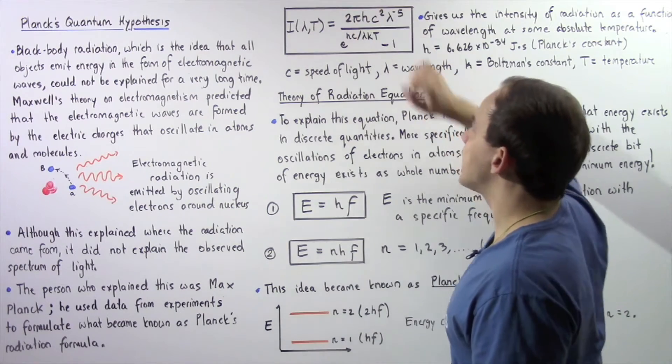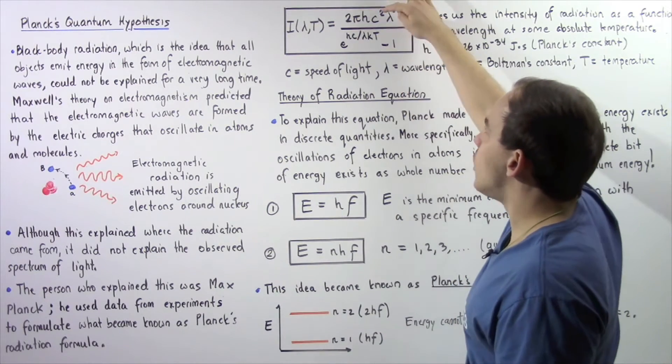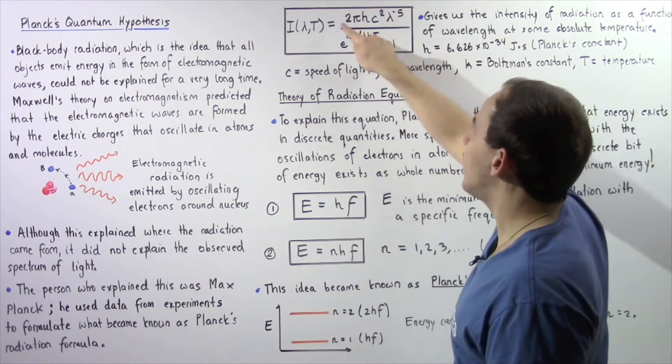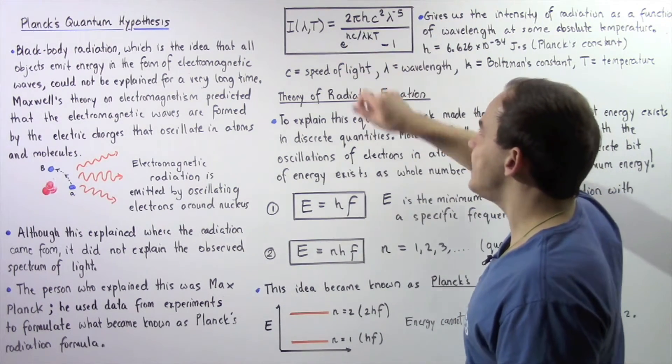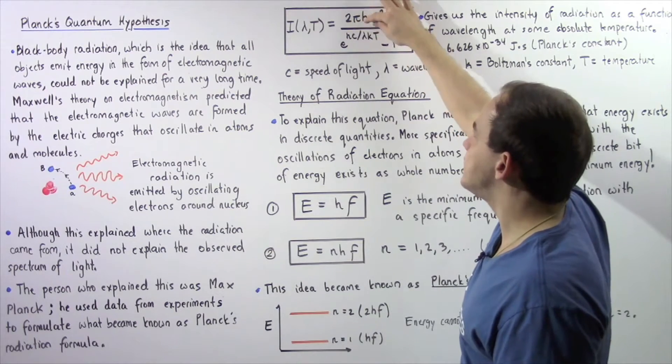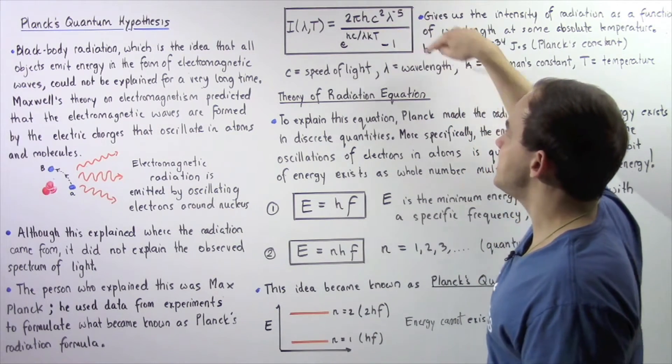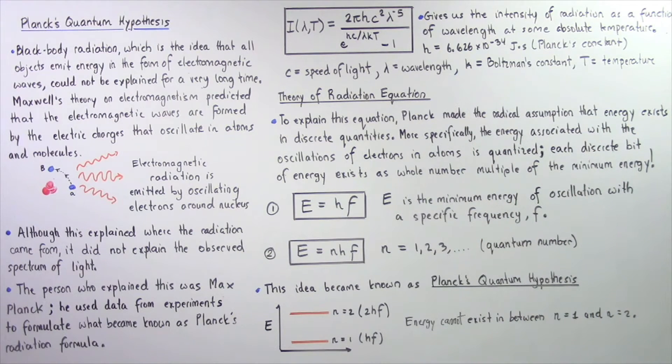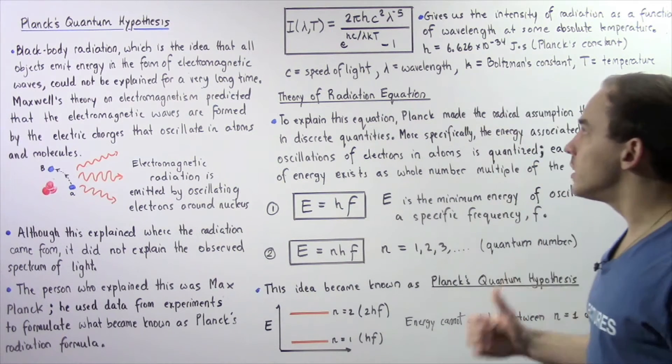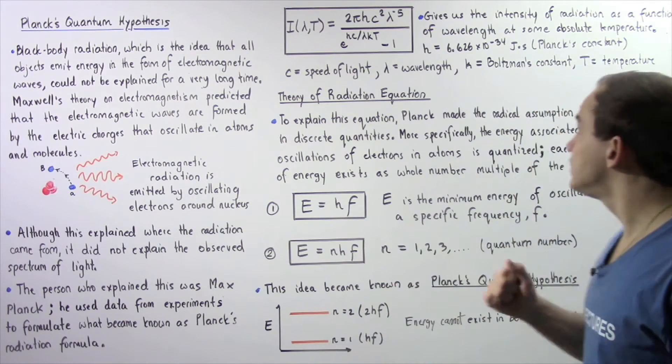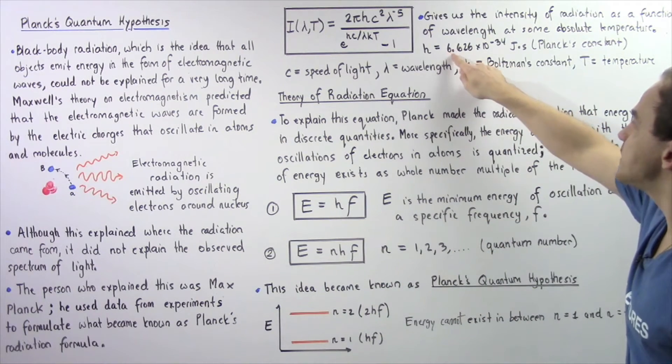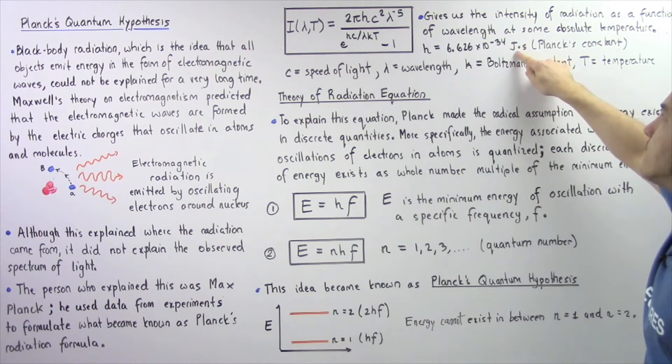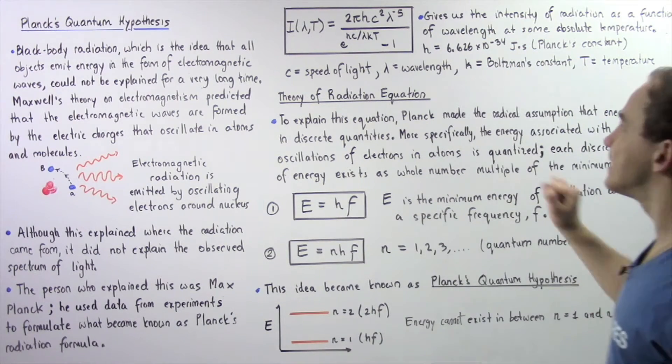So the intensity is equal to 2π multiplied by h multiplied by c² multiplied by λ to negative fifth power divided by e to the hc divided by λkt minus 1. Now h became known as Planck's constant. It's a value that was obtained experimentally and is equal to 6.626 × 10⁻³⁴ joules multiplied by seconds.